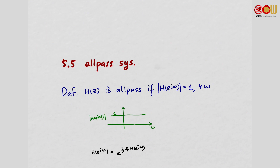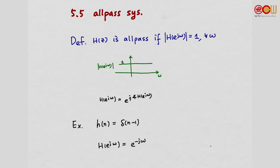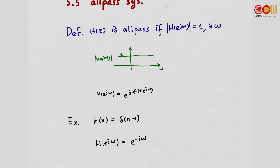But if we look at the phase, it will be a function that can vary with frequency. A simple example of an all-pass system is a delay: H(n) is a delay, and H(e^{j omega}) = e^{-j omega}. The magnitude is indeed 1. This trivial all-pass has only one non-zero coefficient.